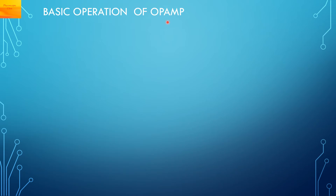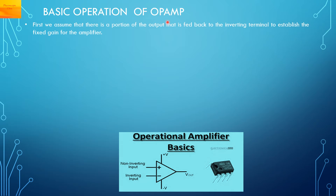Basic operation of OPAMP: we assume that a portion of the output voltage is fed back to the inverting terminal to establish a fixed gain for the amplifier. This is negative feedback.